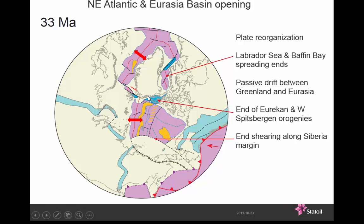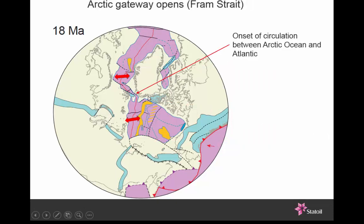Spreading is taking place in the Eurasia Basin and this is probably the end of shearing along the Siberian margin. This margin linking the northeast Atlantic to the Arctic Ocean actually starts to more passively drift instead of shearing — although there's probably some shearing still taking place. And lastly, a reminder of this link between the Arctic Ocean and the northeast Atlantic along the Fram Strait, with that link-up happening about 18 million years ago.